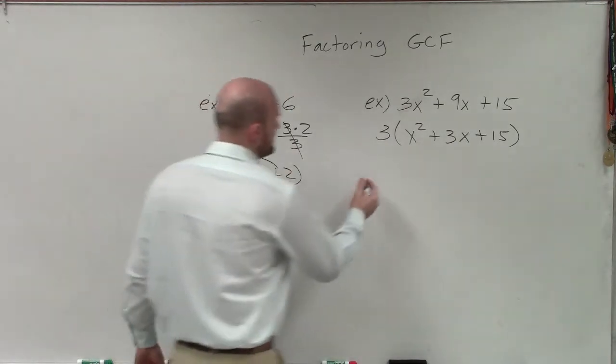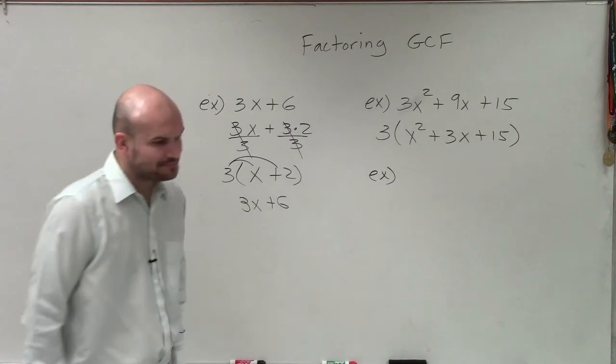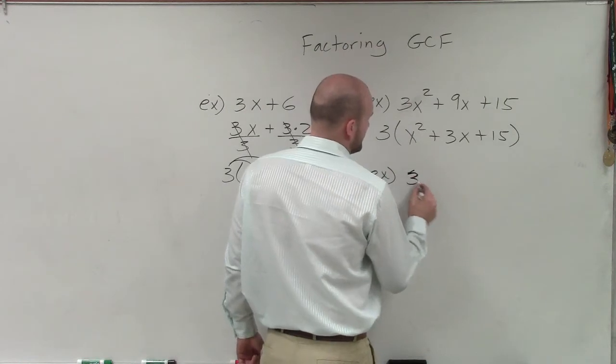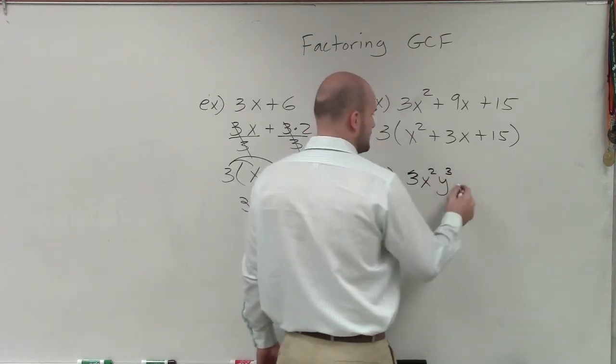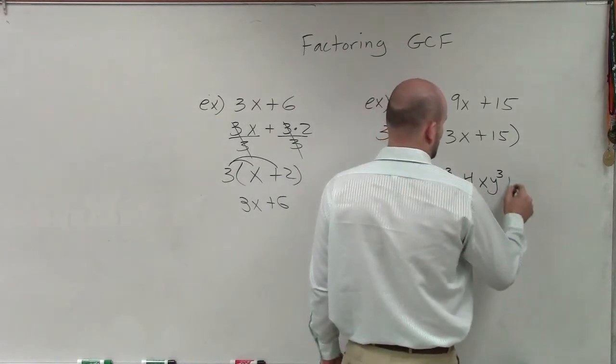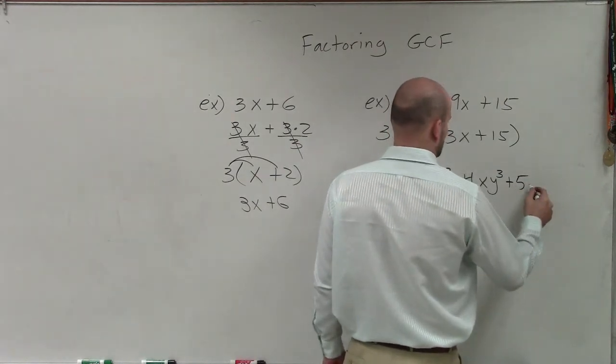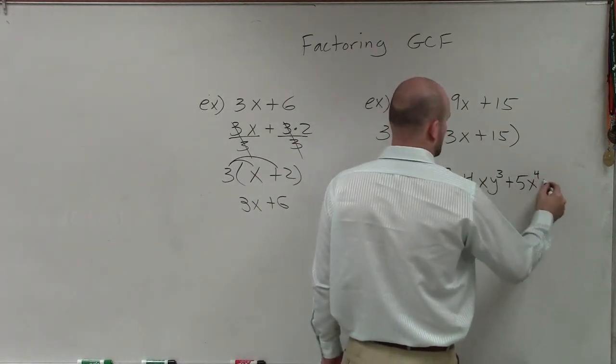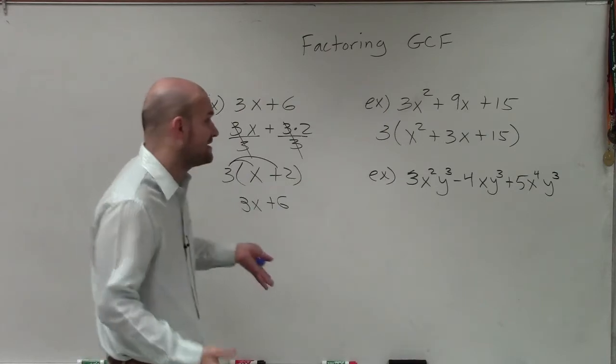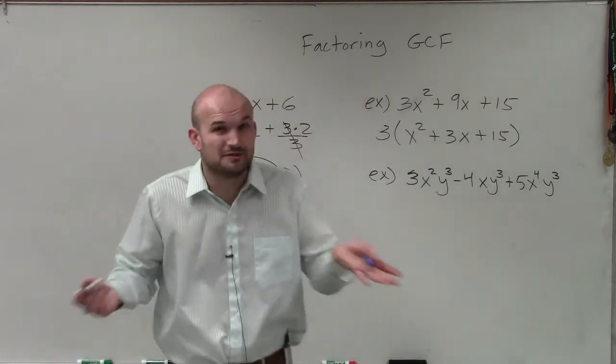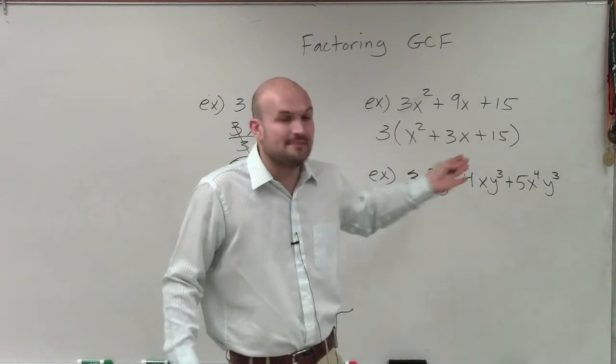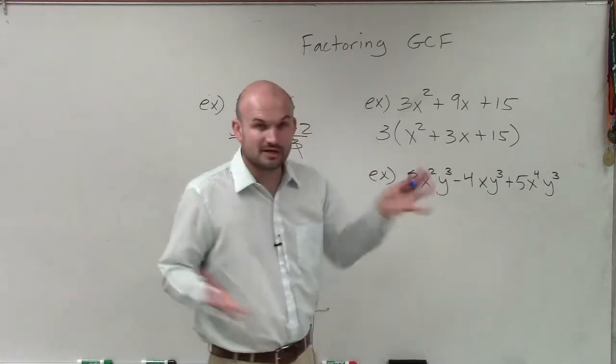But factoring out the GCF is not always just contained with dealing with numbers. It also works in, let's say, I had 3x squared y to the third minus 4xy to the third plus 5x to the fourth y to the third. So in this case, you could see that, well, what do they have in common? Unfortunately for the numbers, 3, 4, and 5 do not share any common factors like 3, 9, and 15 do. I can't evenly divide the same number into 3, 4, and 5. So those numbers are going to remain.